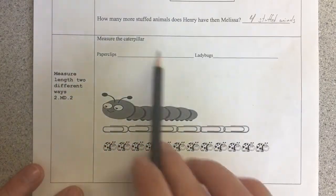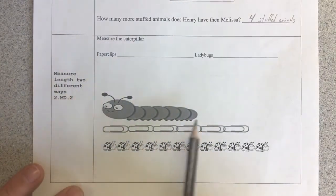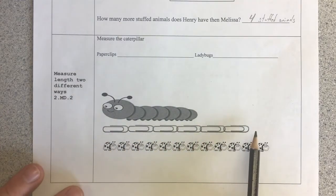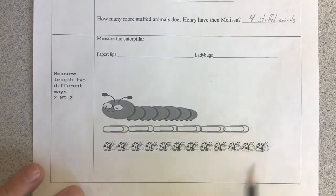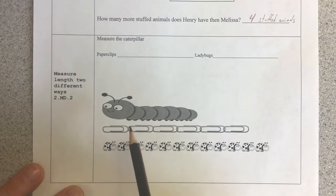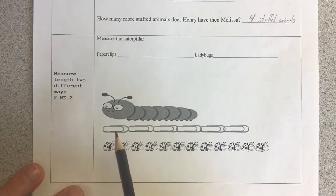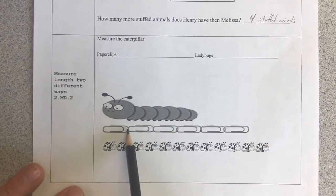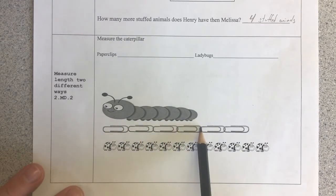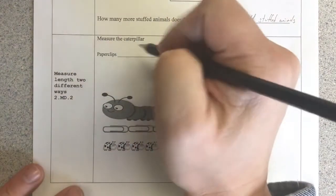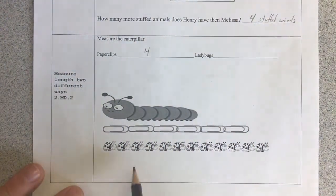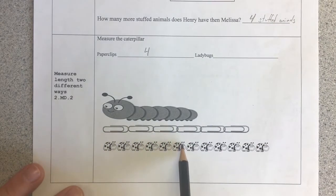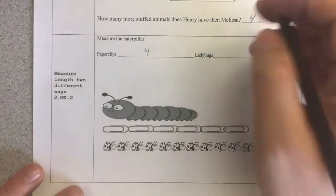Measure length two different ways. We're going to measure the caterpillar. I'm going to measure it using paper clips to the nearest paper clip and ladybugs to the nearest ladybug. One thing you'll notice is a paper clip is almost twice as long as a ladybug. Two ladybugs goes a little bit further than a paper clip. So obviously it's going to take far fewer paper clips than ladybugs. So let's check. 1, 2, 3, 4. So it's closer to four whole paper clips. And then ladybugs. 1, 2, 3, 4, 5, 6, 7. Seven ladybugs.